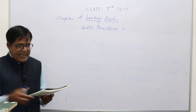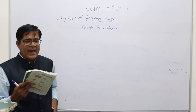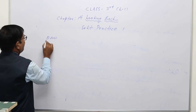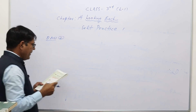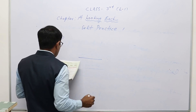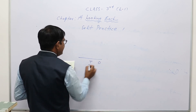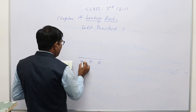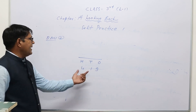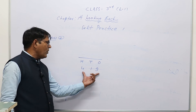Question number two: represent the following numbers on abacus. The first question — we are given the number 419 in standard form or numeral form.